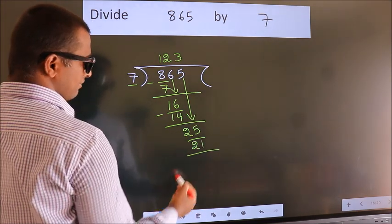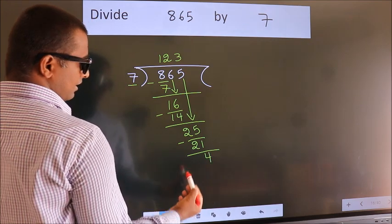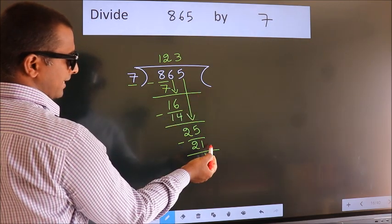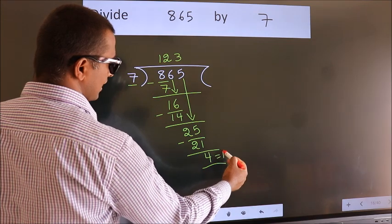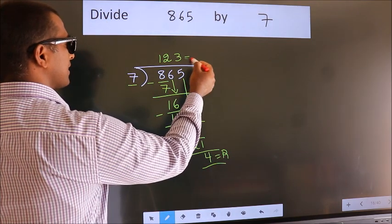Now we subtract. We get 4. No more numbers to bring down, so we stop here. This is our remainder. This is our quotient.